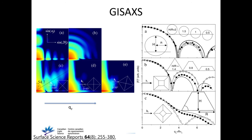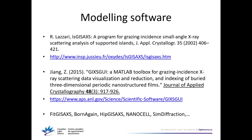These are examples of different nanoparticle shapes: the first is a cylinder, the second is a sphere, and then a pyramid with different orientations — different orientations give different signals. This is a simulation, and for example the pyramid, whether it has a sharp tip or is truncated, again gives different signals. Simulating a GISAXS signal can be very useful to learn what kind of nanoparticles you have.